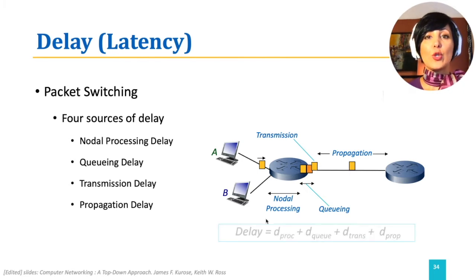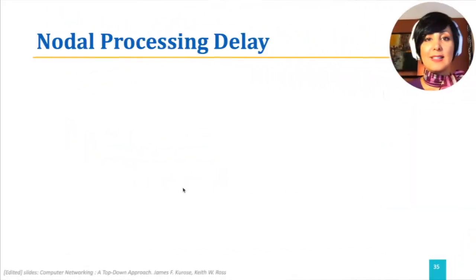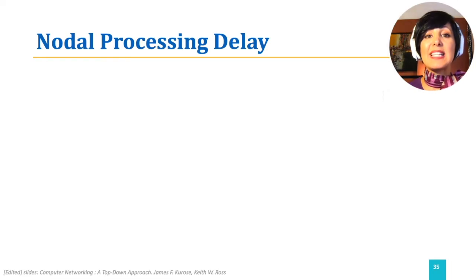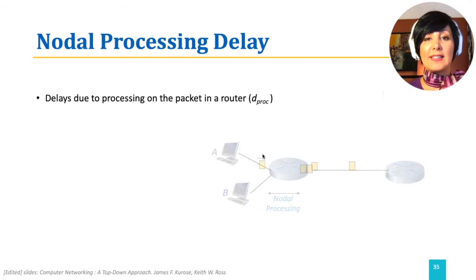The total delay at each node is a sum of these four types of delay. The time required to process a packet in a router causes the packet to experience a delay in reaching the destination. This delay is called nodal processing delay.